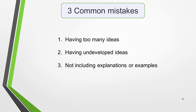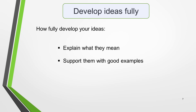Before we move on to writing these two main body paragraphs, you need to be aware of three common errors that students make. Knowing these will help you avoid making them yourself. First, having too many ideas. Second, having undeveloped ideas. Third, not including explanations or examples. You only have to write around 250–300 words for your Task 2 essay. If you have too many ideas, you won't have time to develop each of them fully — you'll lose marks for this, and there will certainly be no extra marks for including lots of different ideas. All you need is one or two ideas for each paragraph and to develop them fully. You simply explain what you mean and support it with good examples.